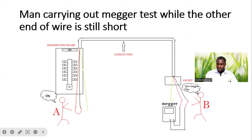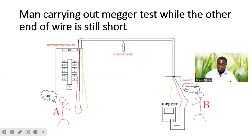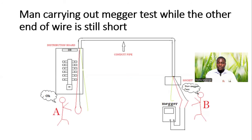He's carrying out the test. He's informing the person at the DB side: 'Now mega test.' The person at the DB side responds: 'Okay.' This just tells us that these two persons performing these tests do not know what they are doing. They need to follow precautionary measures while carrying out the test.